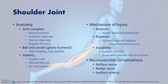The acromioclavicular articulation, which is superior to the glenohumeral joint, provides stability from a forceful upward movement of the humeral head — for example, if you fall onto the outstretched hand. The most common mechanism of injury of the shoulder joint is hyperabduction and hyperextension, which tends to lead to an anterior dislocation. By far the commonest dislocation we see is anterior.